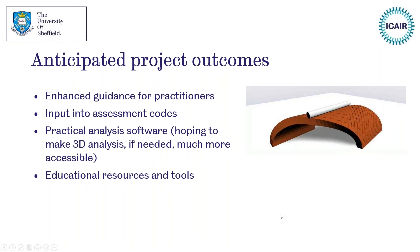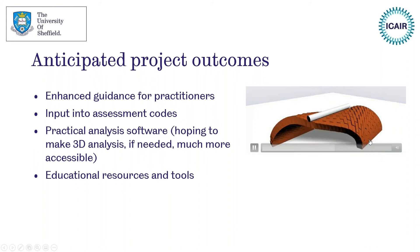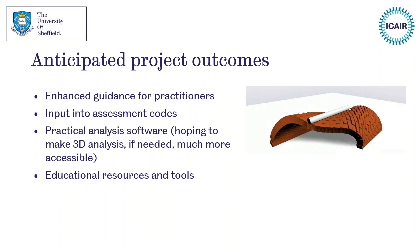Software tools include things like an online physics engine so people can play around with 3D masonry arch bridges to look at how they behave, as well as more rigorous software tools that can be used to actually compute the amount of load required to cause either collapse or to exceed the permissible limit state.